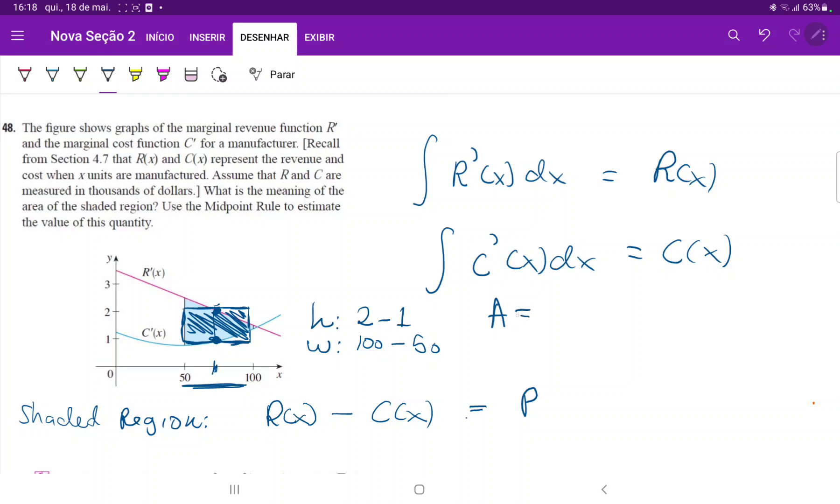So the area is equal to 2 minus 1, so 1, times 100 minus 50, times 50. And so it is 50.